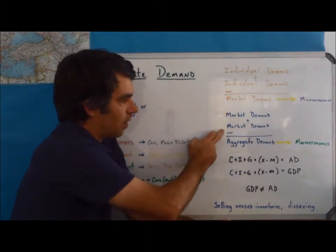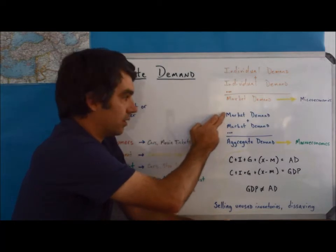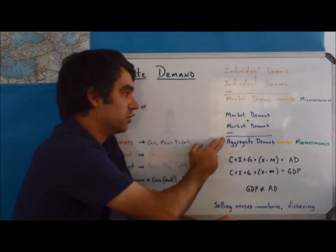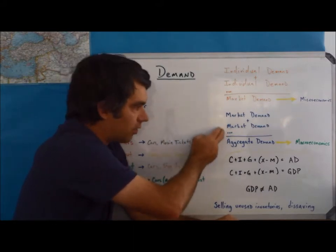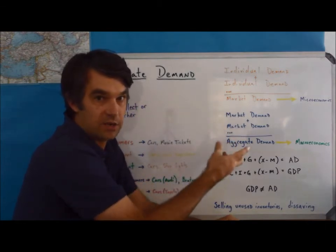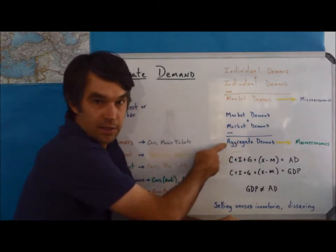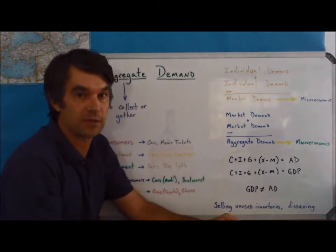Then, when we start looking at all the markets inside of the country, so the market for haircuts, the market for shoes, the market for oil, the market for ditch diggers, all the markets of everything inside of a country, that's going to be aggregate demand. And that's what we study in macroeconomics.